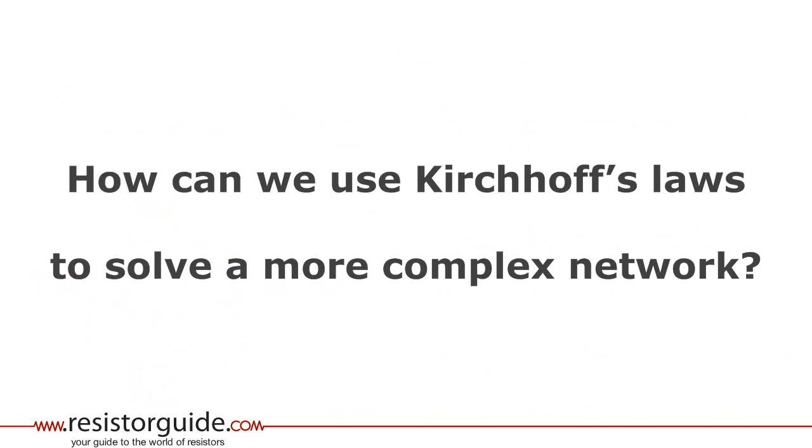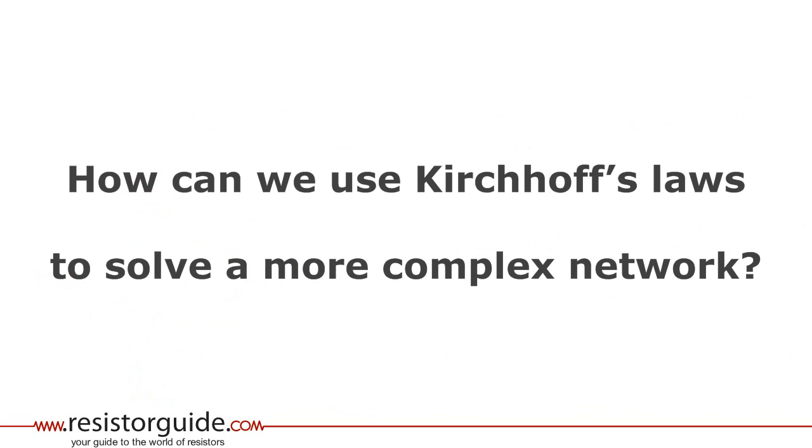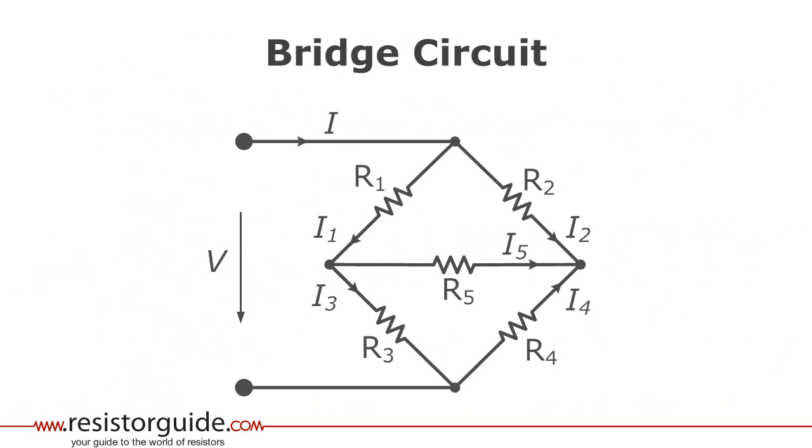How can we use Kirchhoff's laws to solve a more complex network? As an example we take a bridge circuit. Using Kirchhoff's first law we can write the equations for the following three nodes where the sum of currents in the nodes are zero.